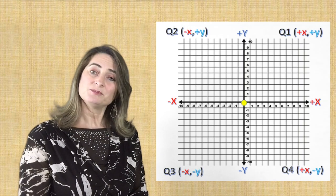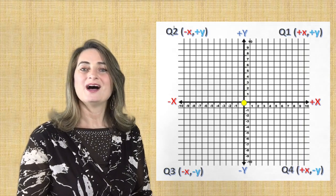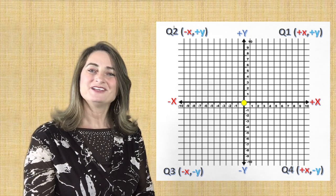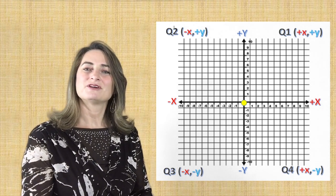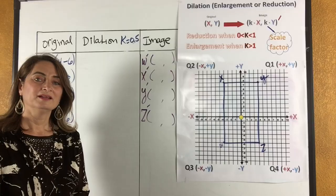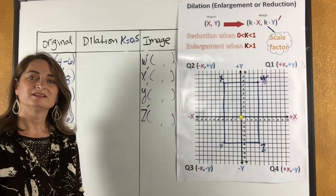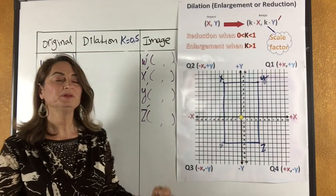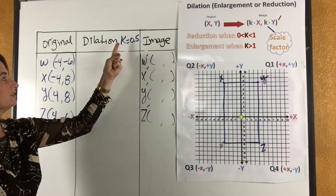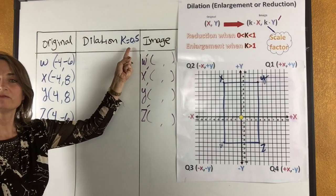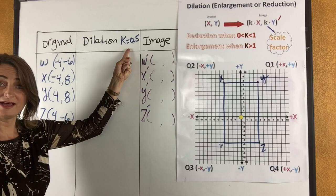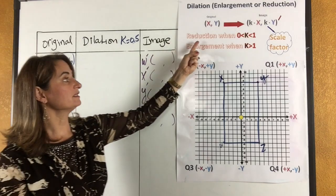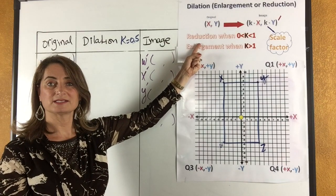Now let's practice on the whiteboard how to dilate a figure in a coordinate plane and figure out the scale factor from dilated figures. Let's dilate figure W, X, Y, and Z in the coordinate plane with a dilation of k equals 0.5. Since 0.5 means half, the scale factor is one-half, which means a reduction because it's less than one.